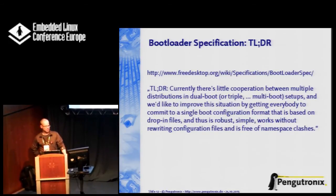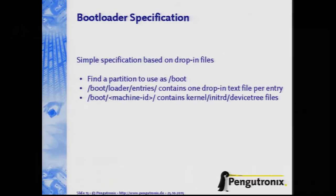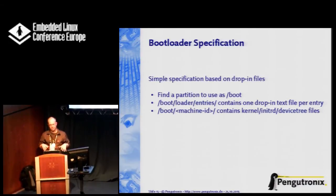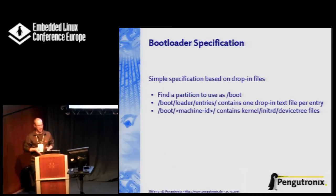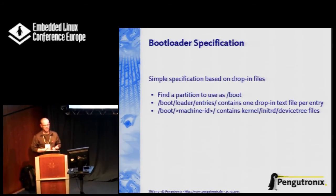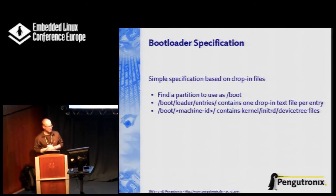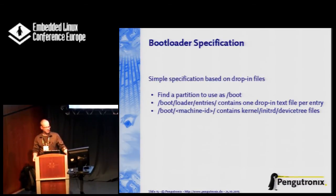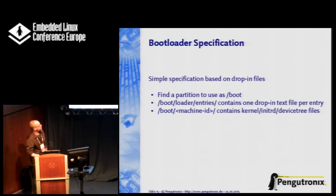That's what I implemented for barebox. The specification only specifies a way to find the boot partition on a device. Each device — each SD card or USB stick or whatever you have — has a single boot partition, shared across different distributions installed on that device. In this boot partition there is a directory named 'loader/entries' containing a single text file per boot entry. There is also a subdirectory with a machine ID containing the kernel, the initrd, device tree files, or whatever else is needed to start.